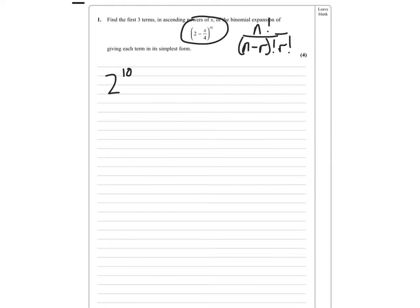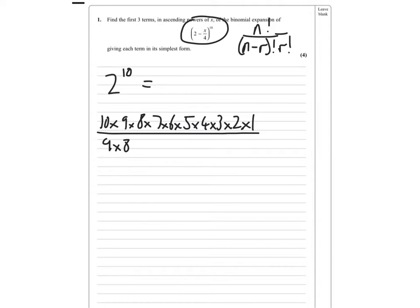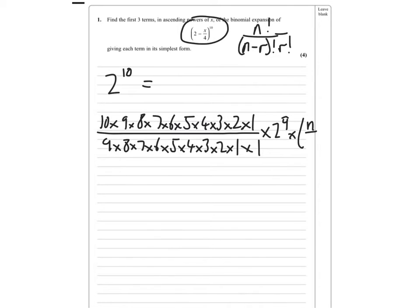The first term is just going to be 2 to the power of 10, which you can do on your calculator nice and easy. The second term is going to be 10 factorial over 9 factorial times 1 — so n minus r is 10 minus 1 and r is 1 — times 2 to the power of 9 times (x over 4) to the power of 1.